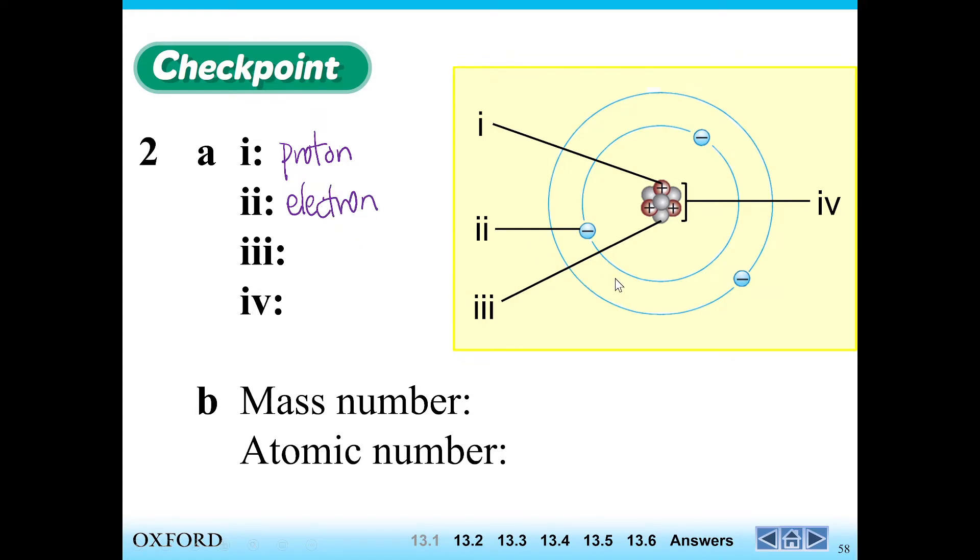3, what's 3? 3 is this gray substance here. Gray subatomic particle. There's no charge on it. So obviously that's a neutron. And they're asking what's the center called? The center is called the nucleus.